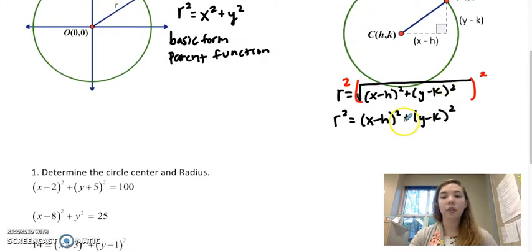And in this case, the center of your circle is always h, k, and then your radius is the square root of what's on the other side. So you can find your center by looking at x and y, you can find your radius by square rooting the number on the end, the constant on the end.